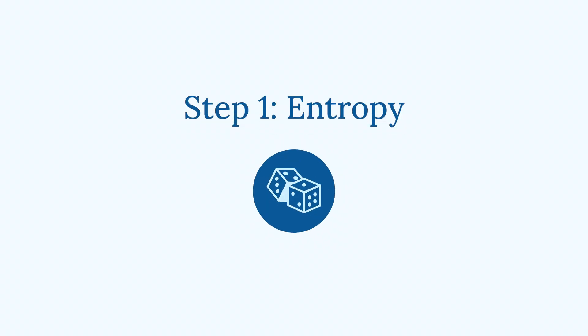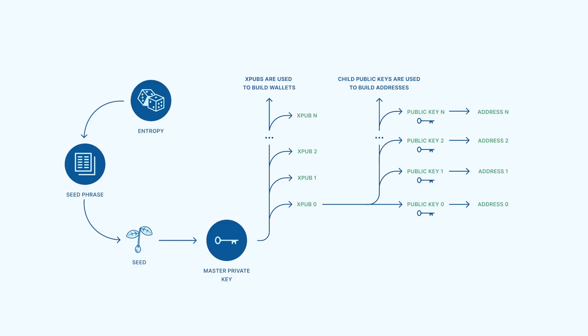Step 1: Entropy. Our initial goal when building a Bitcoin wallet from scratch is to create the master private key which will control the wallet. The first step involves something called entropy. The master private key we're trying to create is really just a secretive large number. Entropy means using unpredictable randomness to arrive at that number, so it would be practically impossible for anyone else to guess it.